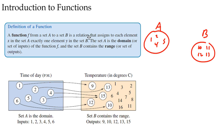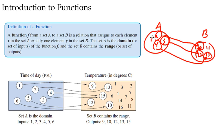The definition says it assigns to each element x in set A exactly one element y in set B. So for every element in set A — like marble two — it goes to one of the marbles in set B. Maybe this marble goes to one marble over here, and this one goes to that marble, and this one goes to another marble. The key word is 'exactly one,' meaning all of these marbles can only go to one of the marbles in set B — only one.